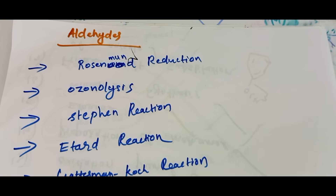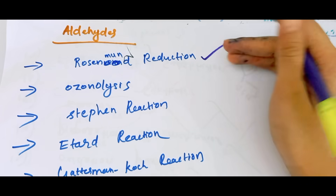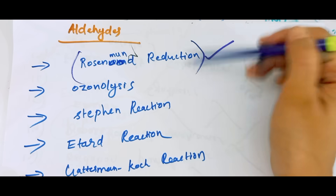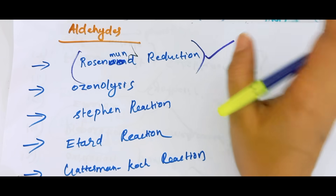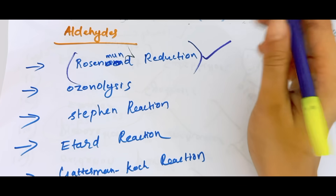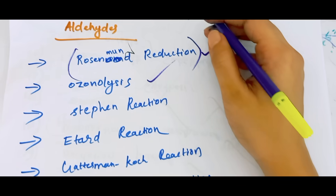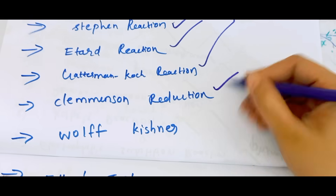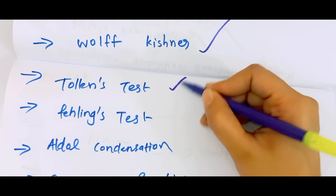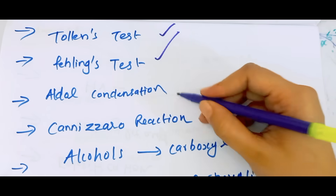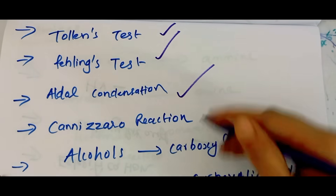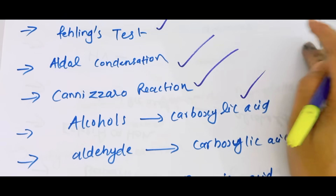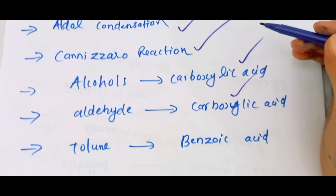There are some named reactions: Rosenmund. If you don't know this video, you must do this video because you don't know this reaction. Stephen reaction, Etard, Gattermann-Koch, Clemmensen and Wolf-Kishner reduction. Tollens test, Fehling's test, Aldol condensation, Cannizzaro reaction. How to convert alcohol to carboxylic acid, aldehyde to carboxylic acid.